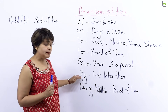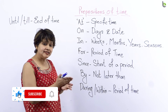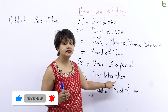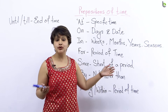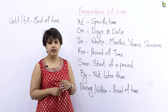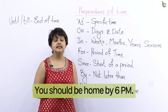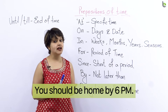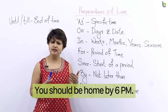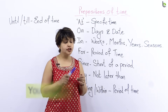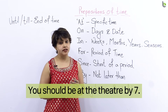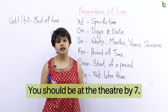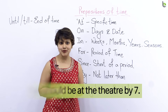BY. By ka matlab hai: not later than. For example: 'You should be home by 6pm.' Tumhe chhe bajay tak ghar pahunchna hi hai. So let's make a sentence: 'You should meet me at the theater by 7.' Tumhe mujhe theater mein seven tak meet karna hi hai — milna hi hai — because the movie will start.